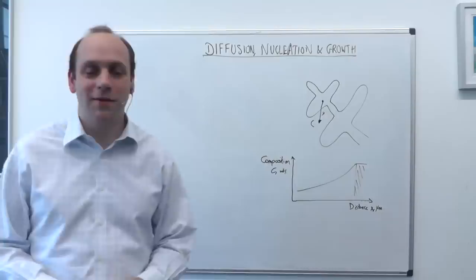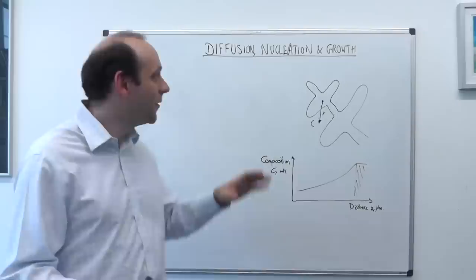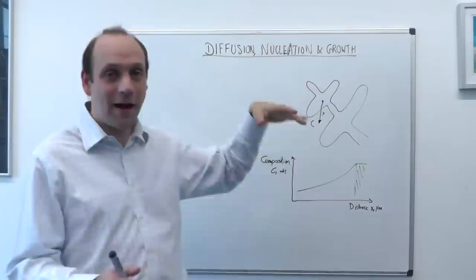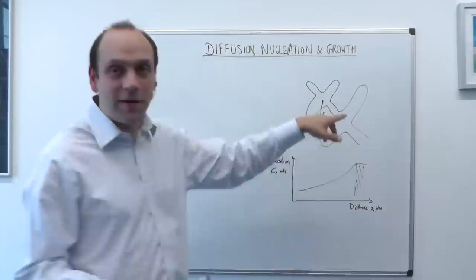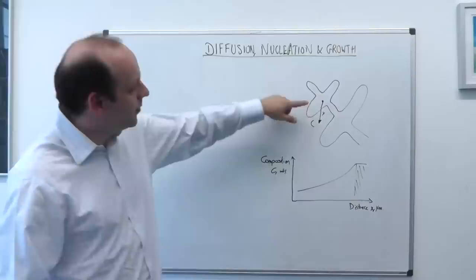This piece is about diffusion, nucleation and growth. We're going to start out thinking about diffusion and then how we form microstructures, how they nucleate, how they begin and how they then grow. Previously we looked at the Scheil solution for solidification in the case where there isn't time for diffusion to happen in the solid, and we said that we typically grow things as dendrites.